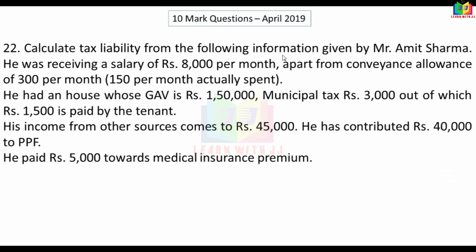Next problem: Calculate tax liability from the following information given by Mr. Amit Sharma. He was receiving salary of Rs.8,000 per month, apart from conveyance allowance of Rs.300 per month, with Rs.150 per month actually spent.